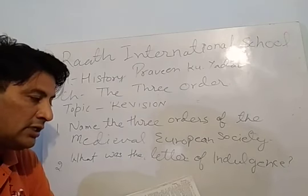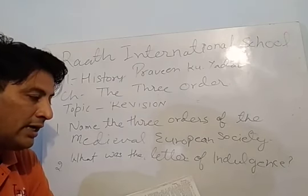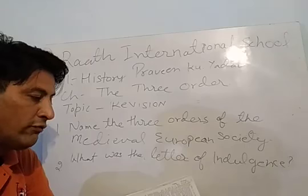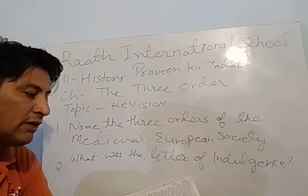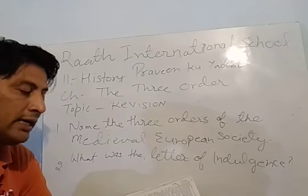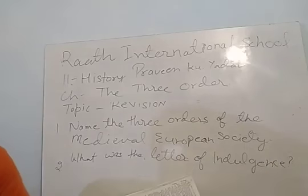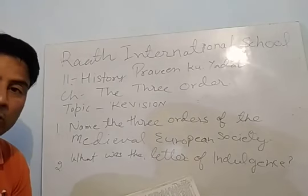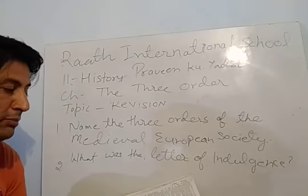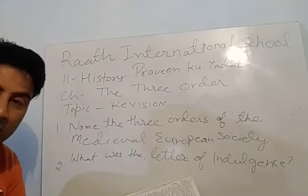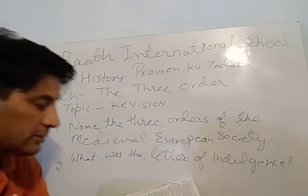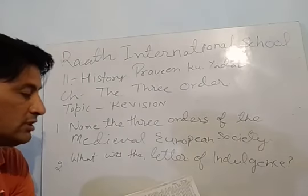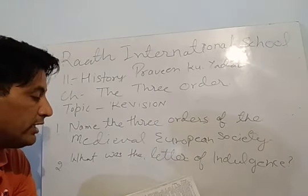In England, wages increased by as much as 50% in the aftermath of the Black Death. When people were killed, the wages of surviving workers increased by around 250%.